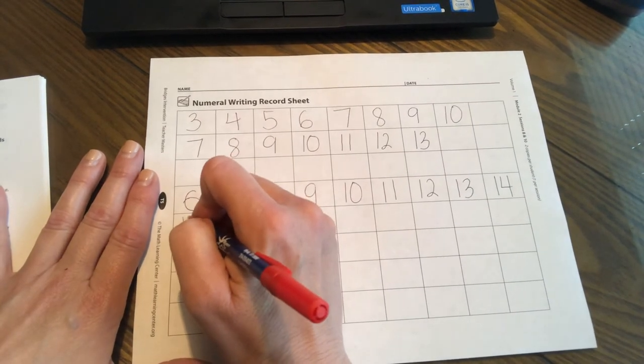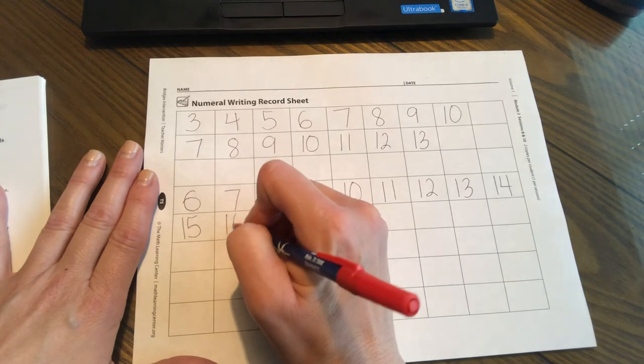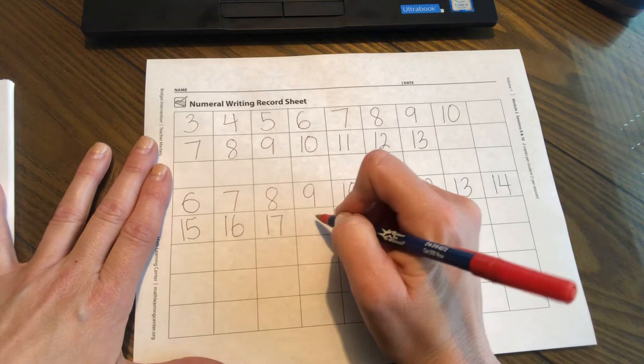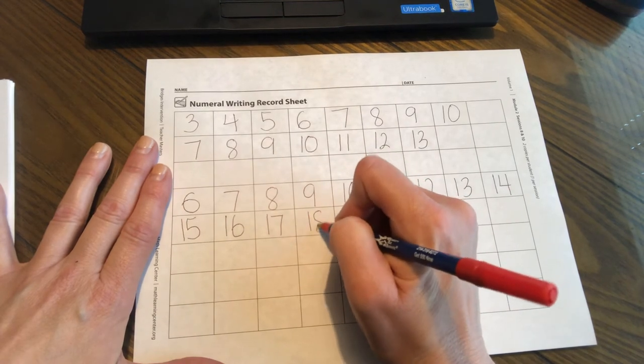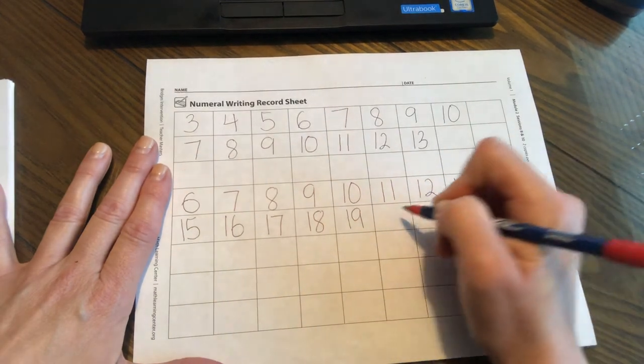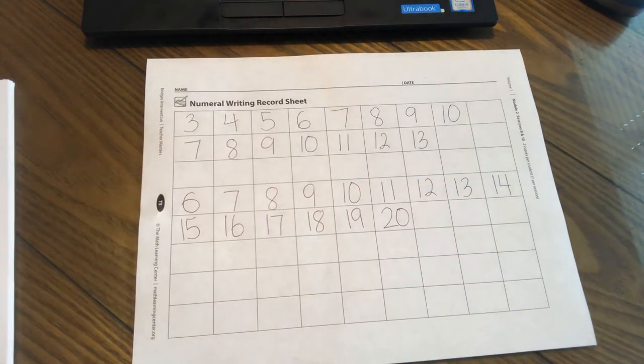Moving on to my next row. So 15, 16, 17, 18, 19, and 20.